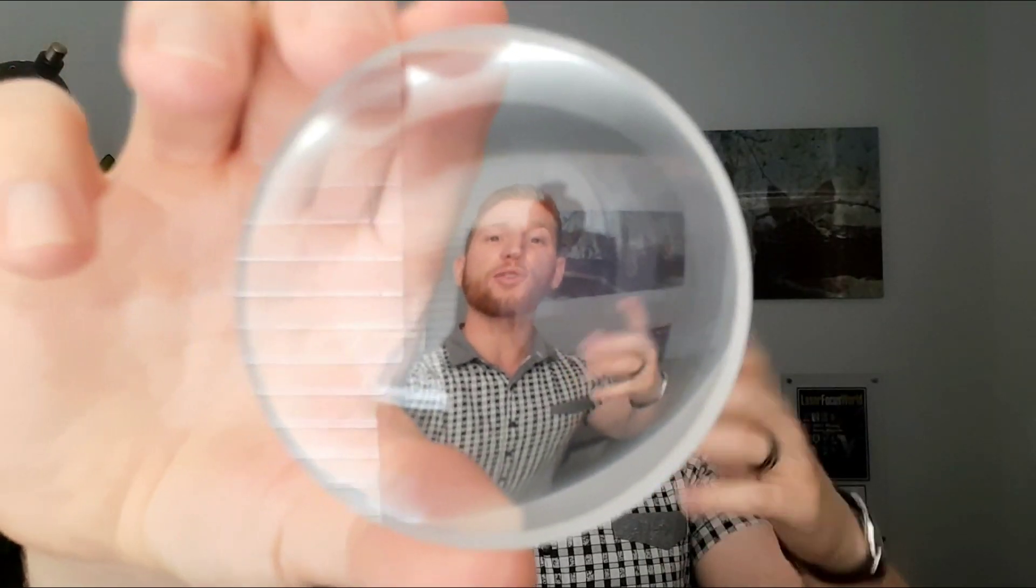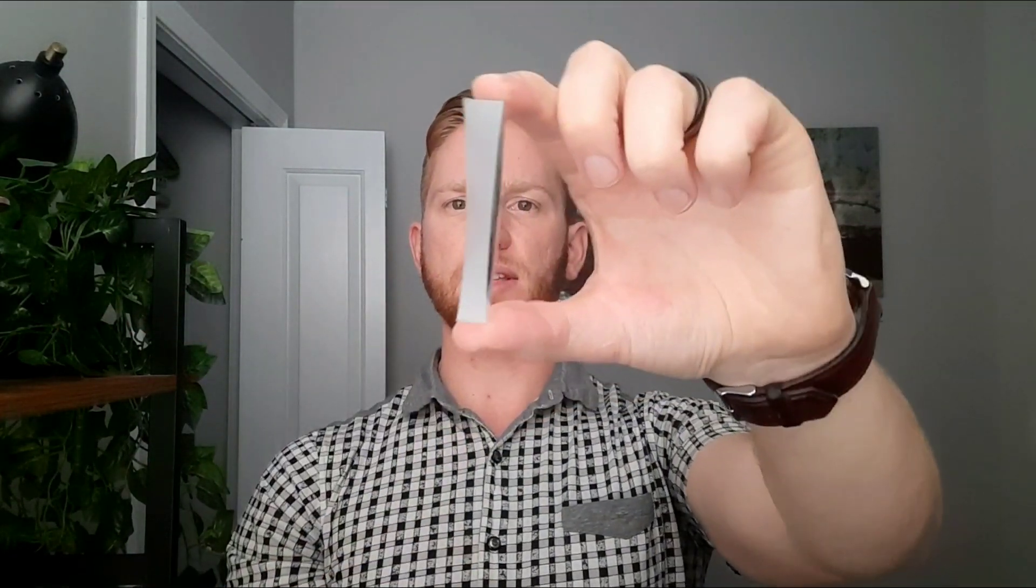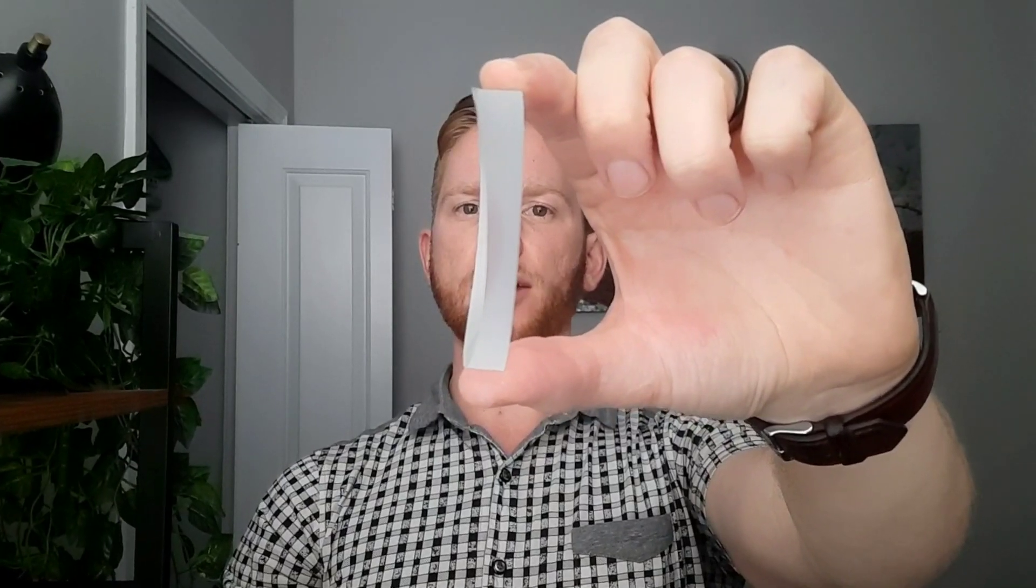Remember that with astigmatism, the eye is curved differently in different directions, so each of those directions will focus light differently. Now we get back to the funky lenses that correct for astigmatism. Because they're correcting for different errors in perpendicular directions, if I hold up this lens, you'll see that in one direction, its thickness and curvature is different than that in the perpendicular direction.